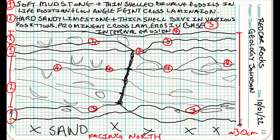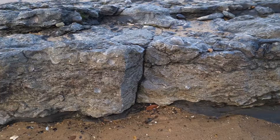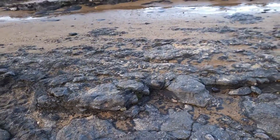Rock two is hard and resistant and has lots of thick-shelled bivalve fossils that are in different positions and often broken. Some of them are in life position but most are jumbled about. Rock two also has prominent cross lamination and internal erosion structures. Rock two also erodes down through rock one and sometimes down into the next layer of rock two, and another important observation is that they're stacked on each other in alternating layers.